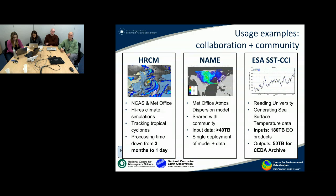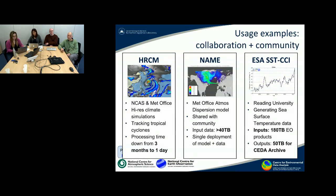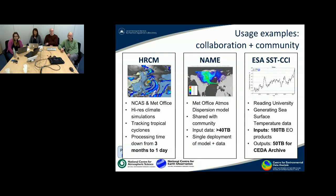It's worth thinking about some usage examples. Jasmine is very much about collaboration and different communities being able to work together. First, we have the high-resolution climate modeling group, a collaboration between people in NCAS and the Met Office. They've used Jasmine to analyse and post-process very high resolution climate simulations, looking at tracking tropical cyclones as you can see in this plot on the left. One advantage was getting their processing time down from around three months to less than a day.